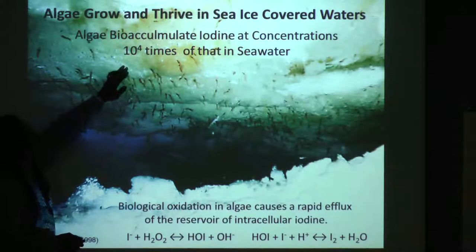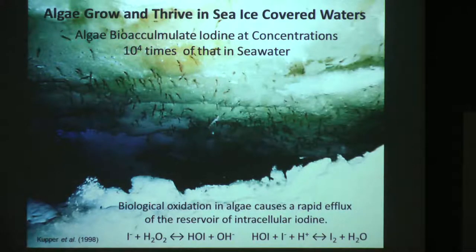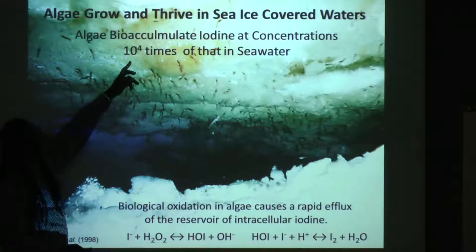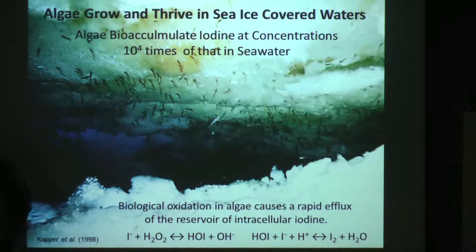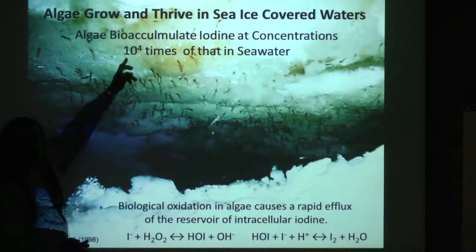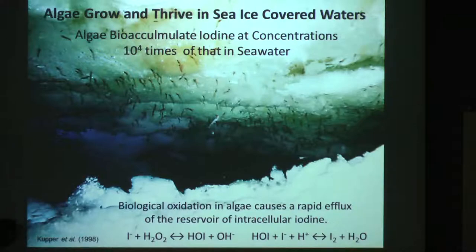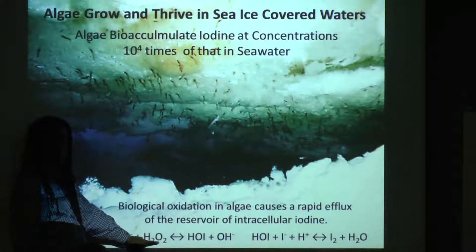People have done measurements comparing the amount of iodine in seawater versus different algae, and they found that algae accumulate so much that it could be the source we're looking for — about four orders of magnitude more iodine compared to seawater. Seawater has a concentration of about 10⁻⁷ molar iodine, and algae in general can have about 10⁻³ molar. That's a huge jump.